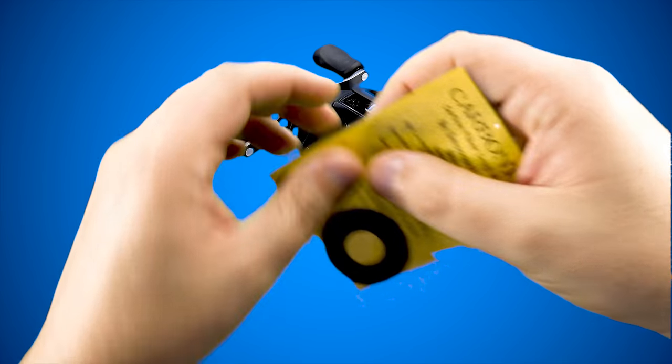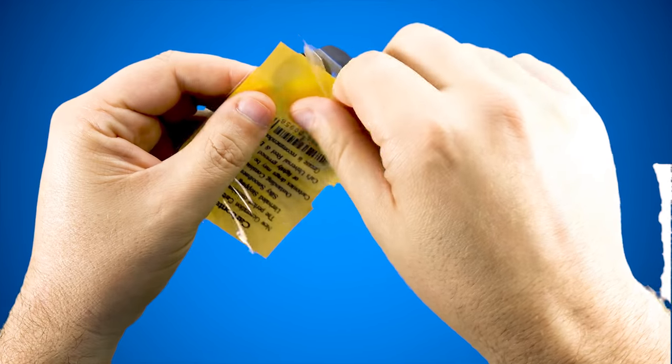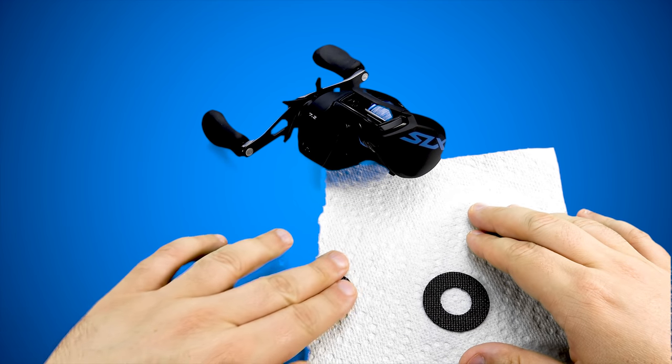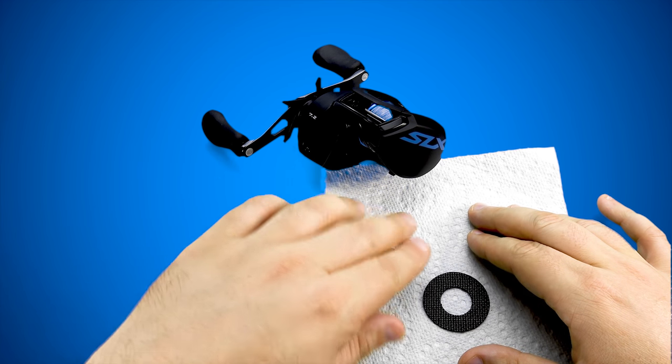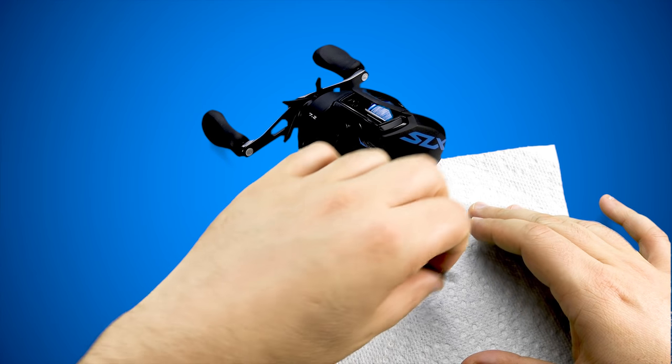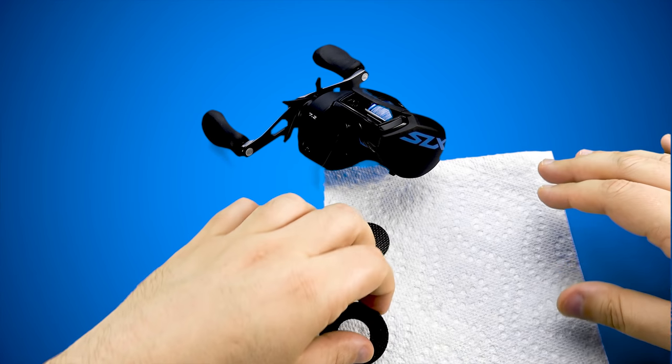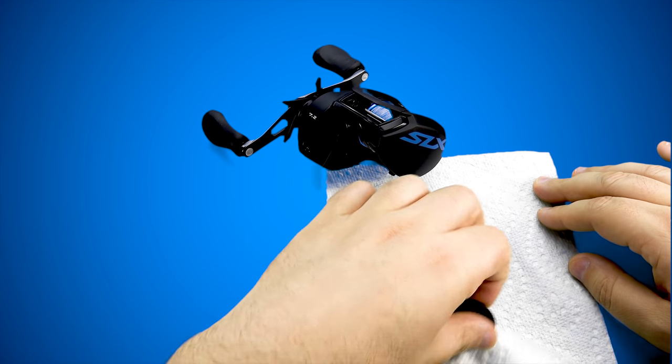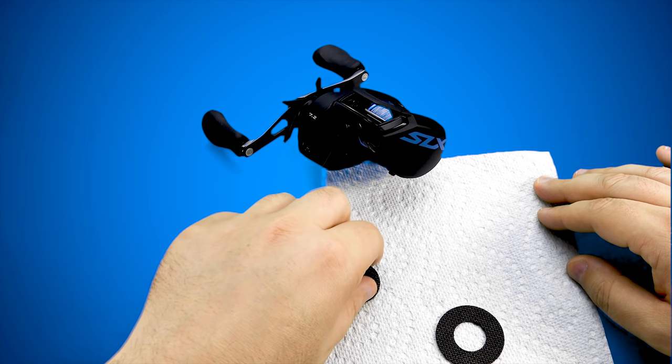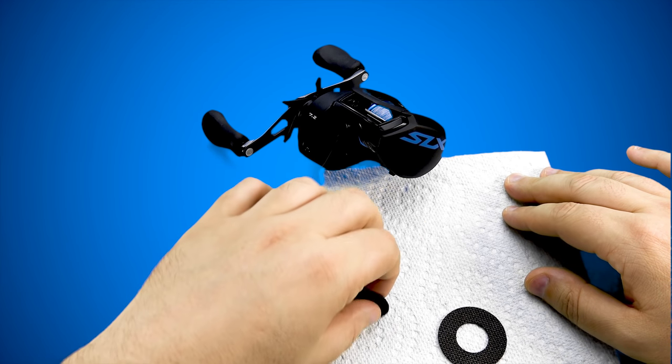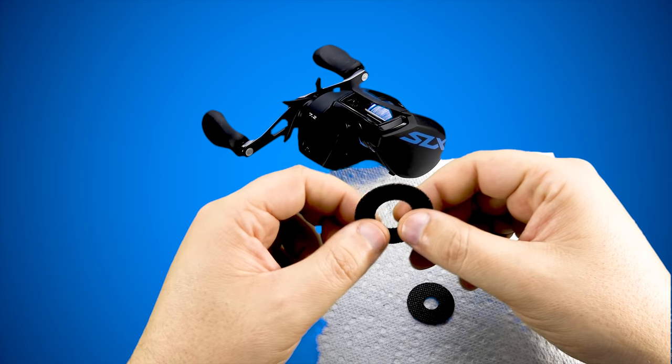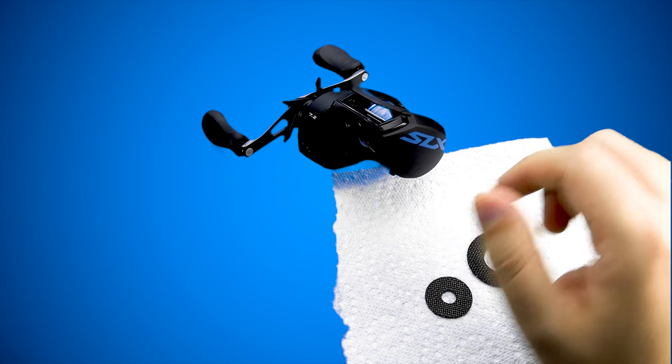Step number one: take your carbon fiber drag washers and remove them from the packaging. Take your paper towel and run the washers over them. You can hear it crackling and tearing over the fibers of the paper towel. You want to do this because when these are cut, they leave kind of a powdery residue and you don't want the dust of the carbon fiber washers getting anywhere in the gear train.